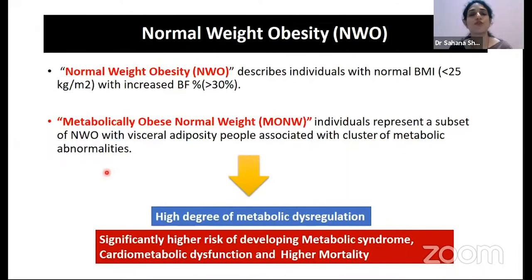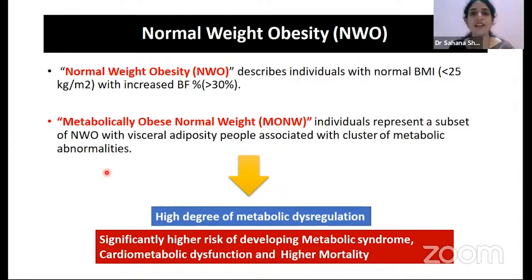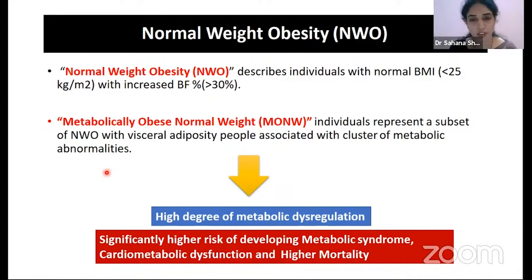Now let's look at the definition of normal weight obesity. This describes individuals who have normal BMI but have increased total adiposity. A subtype is metabolically obese normal weight, where individuals again have normal BMI but higher visceral adiposity and clusters of metabolic abnormalities. These individuals have shown to have a higher degree of metabolic dysfunction, cardiometabolic dysfunctions, and higher mortality compared to those with normal or lower body fat percentage.